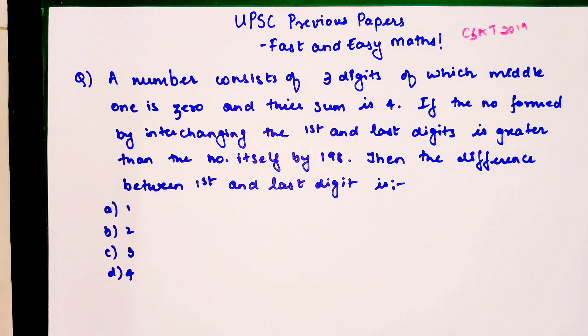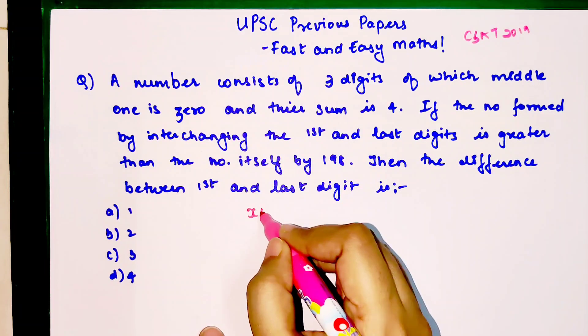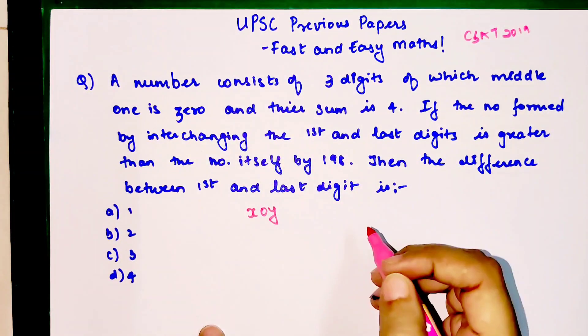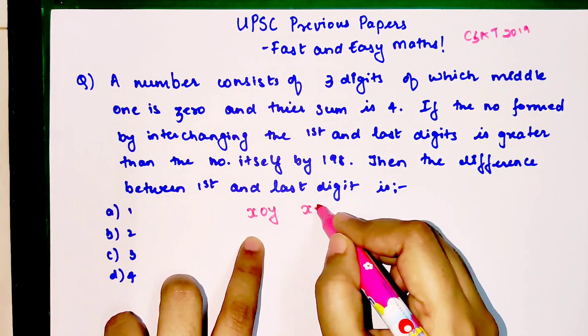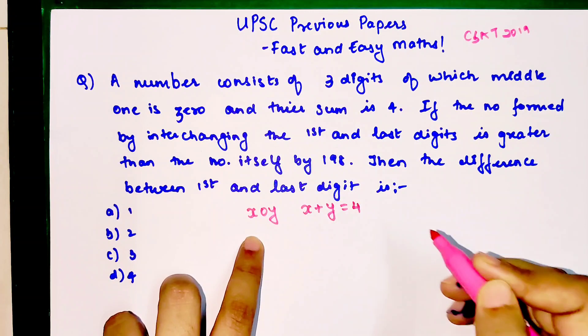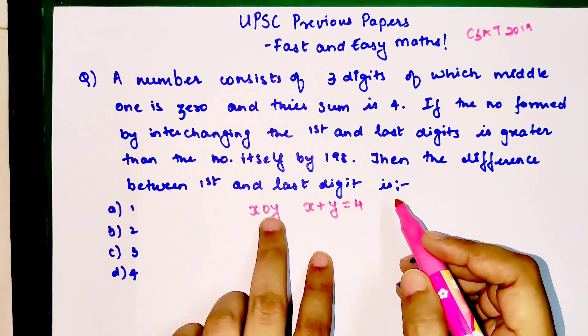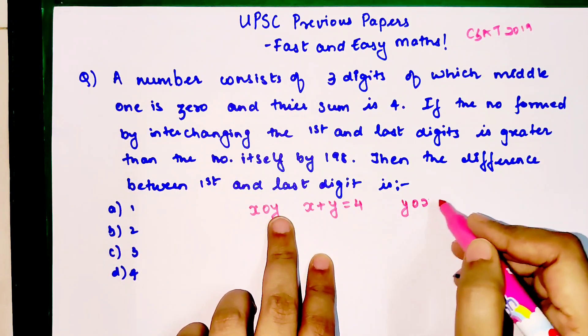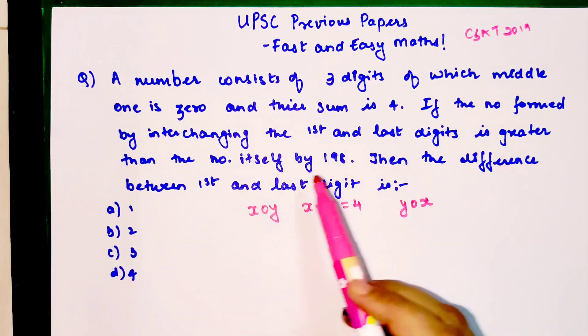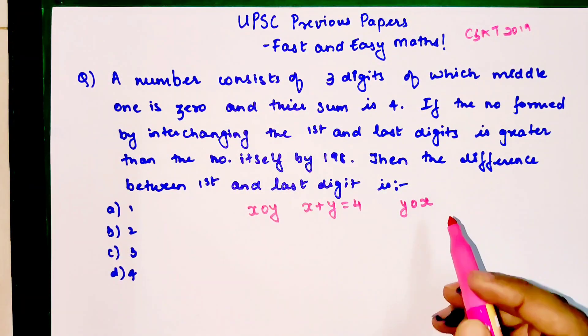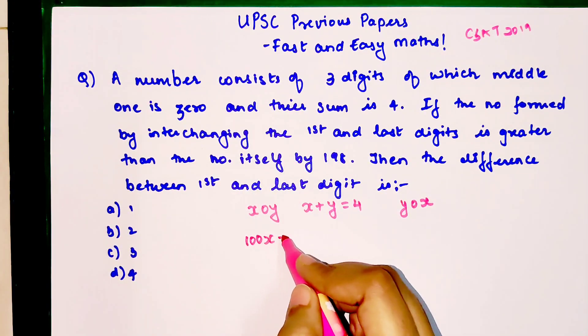Let's say the digit is x zero y, because the middle digit is zero. We know that the sum is four, so x plus y equals four. Then they are saying the number is interchanged, so it becomes y zero x, and the difference between the two is 198.